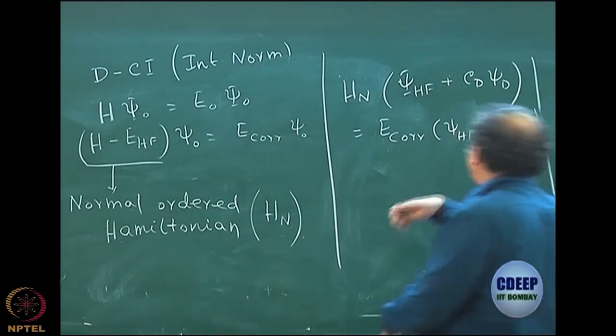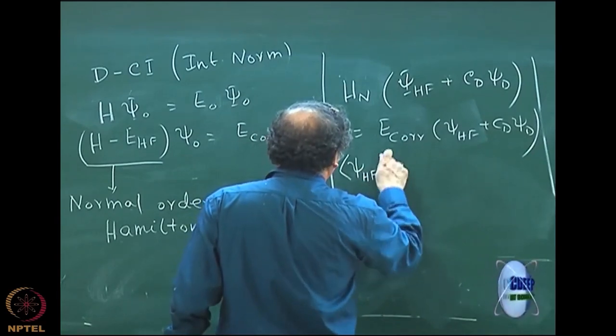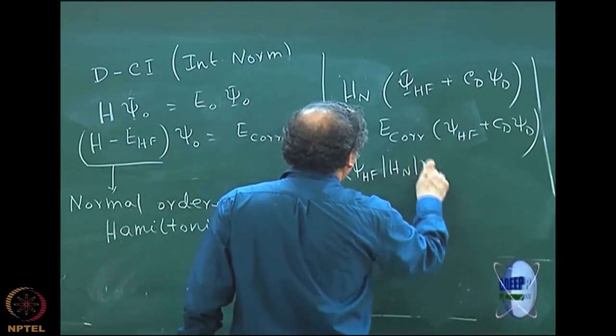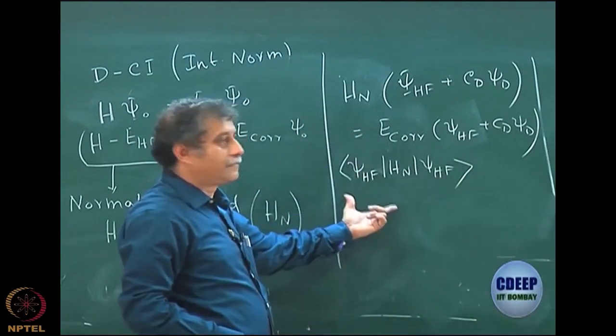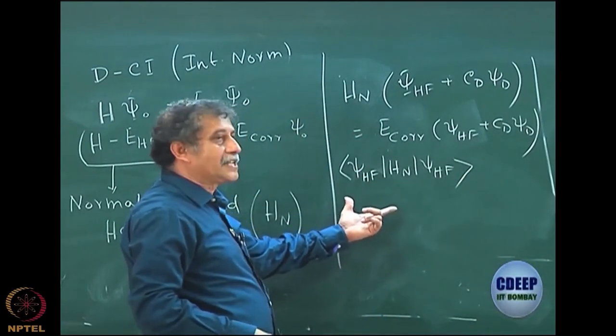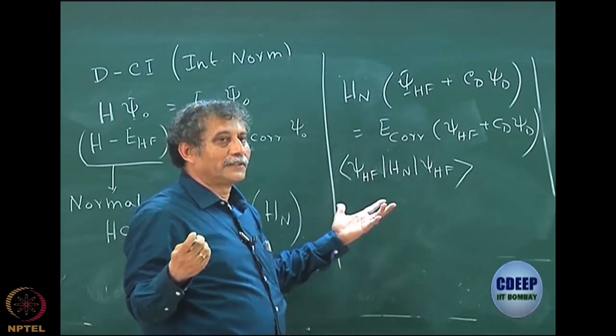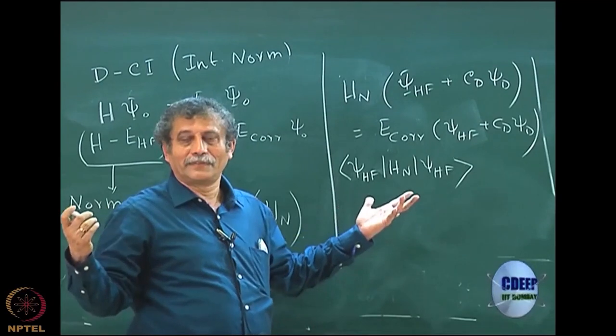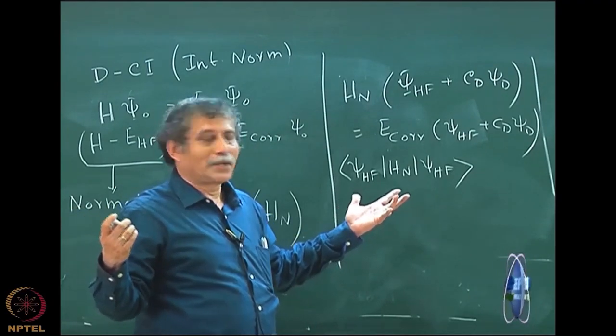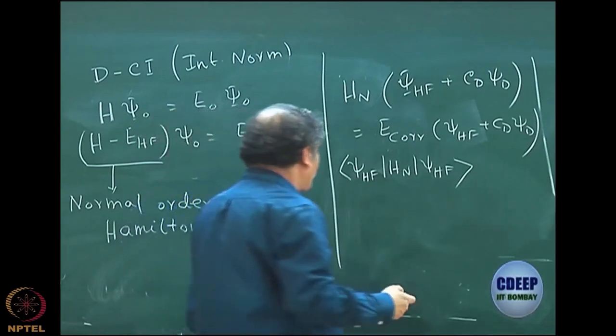So I do this exactly the same thing now. I have got psi Hartree-Fock, H_N psi Hartree-Fock. What will be the result of this? Can somebody tell me? What is the average value of H_N with respect to psi Hartree-Fock? Zero. Everybody agrees? Because H will give you E Hartree-Fock, I have subtracted E Hartree-Fock, so that is zero. So this is gone.